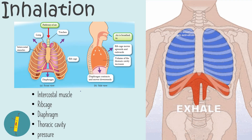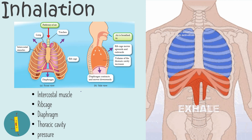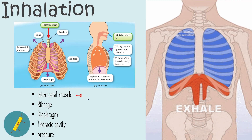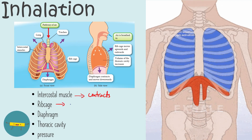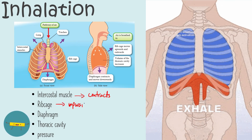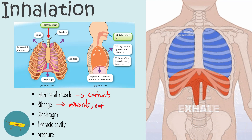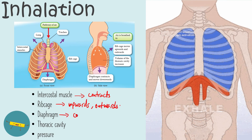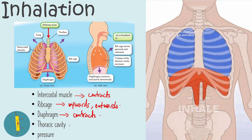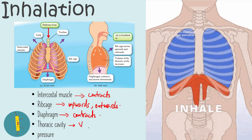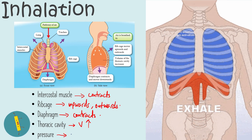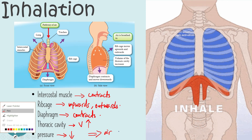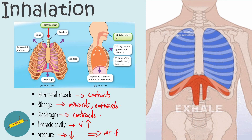So today you have learned the mechanisms for inhalation and exhalation. Just to recap: during inhalation, the intercostal muscles contract, causing the ribcage to move upwards and outwards. At the same time, the diaphragm also contracts. This causes the volume of the thoracic cavity to increase. Hence, the pressure inside the thoracic cavity will decrease. As a conclusion, the air is forced into the lungs.